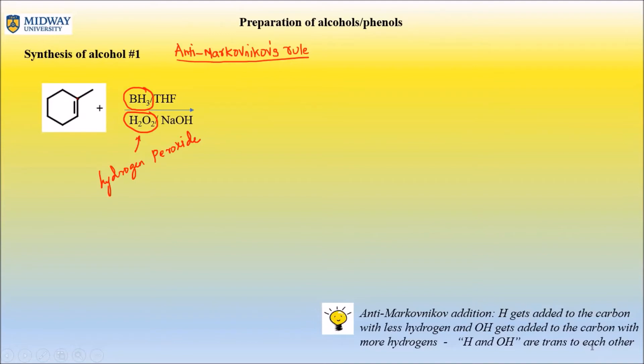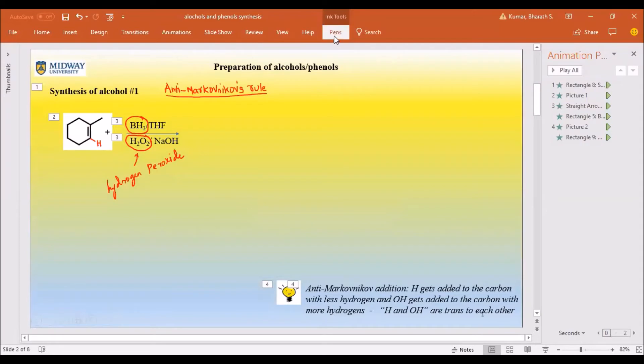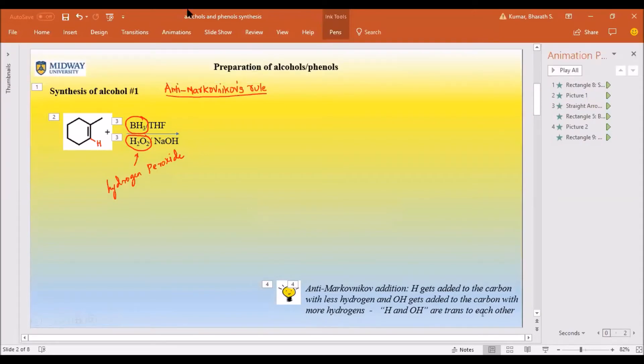If you look at this molecule, this carbon already has four bonds, so it has zero hydrogens. This, however, has got one hydrogen already to start with. So where do you think I'm going to - let me get out of this full screen mode so I can use a different color.